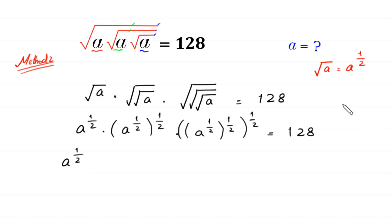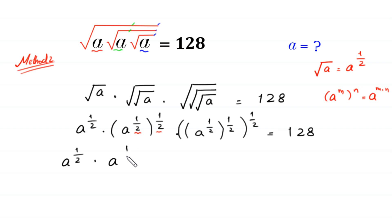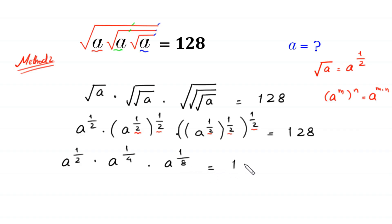This a to the power 1/2 remains the same. By using the power rule (a^m)^n = a^(m·n), we multiply power 1/2 by 1/2 to get 1/4. Then multiplying 1/4 by 1/2 gives 1/8. So the expression becomes a^(1/2) times a^(1/4) times a^(1/8), all equal to 128.